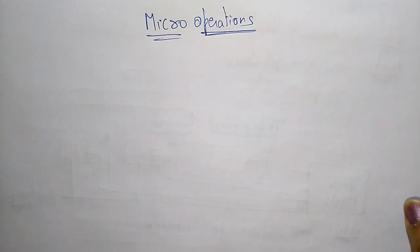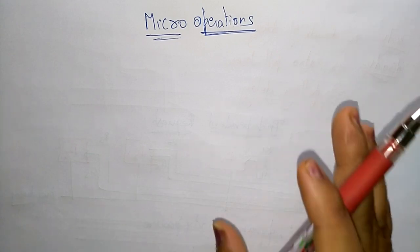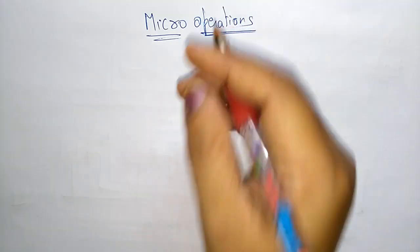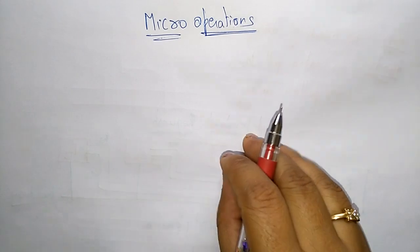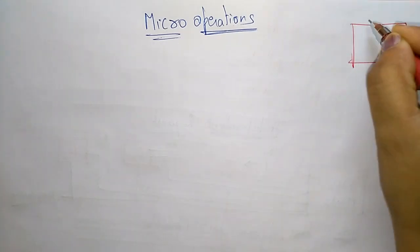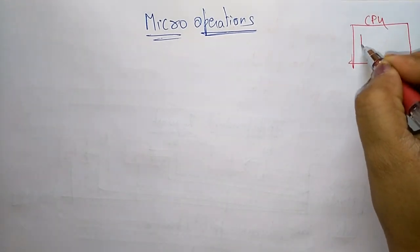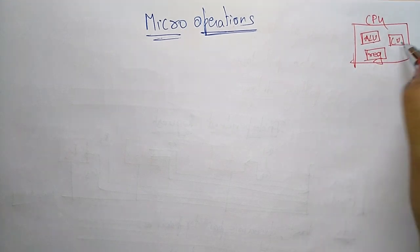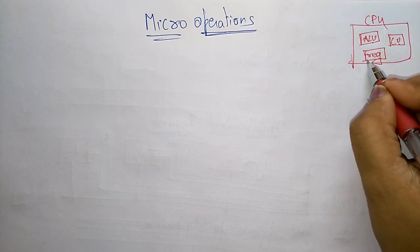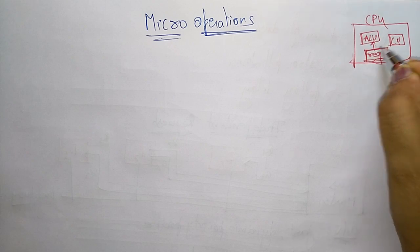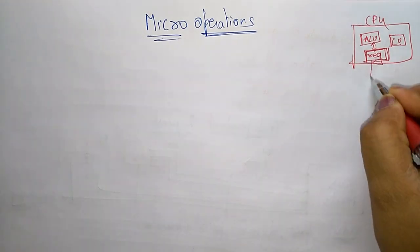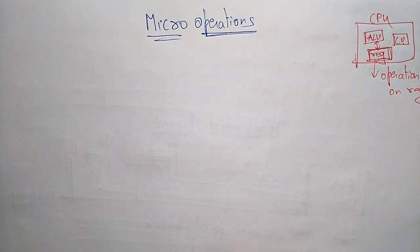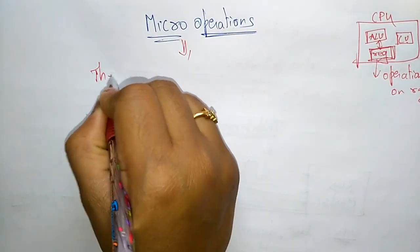Let us continue with the topic of micro operations. Micro operations are the operations executed on data stored in registers. The CPU consists of an arithmetic logic unit, a control unit, and registers. The ALU performs operations, the control unit controls operations, and registers store the data the processor needs to execute. Operations done on registers are called micro operations.